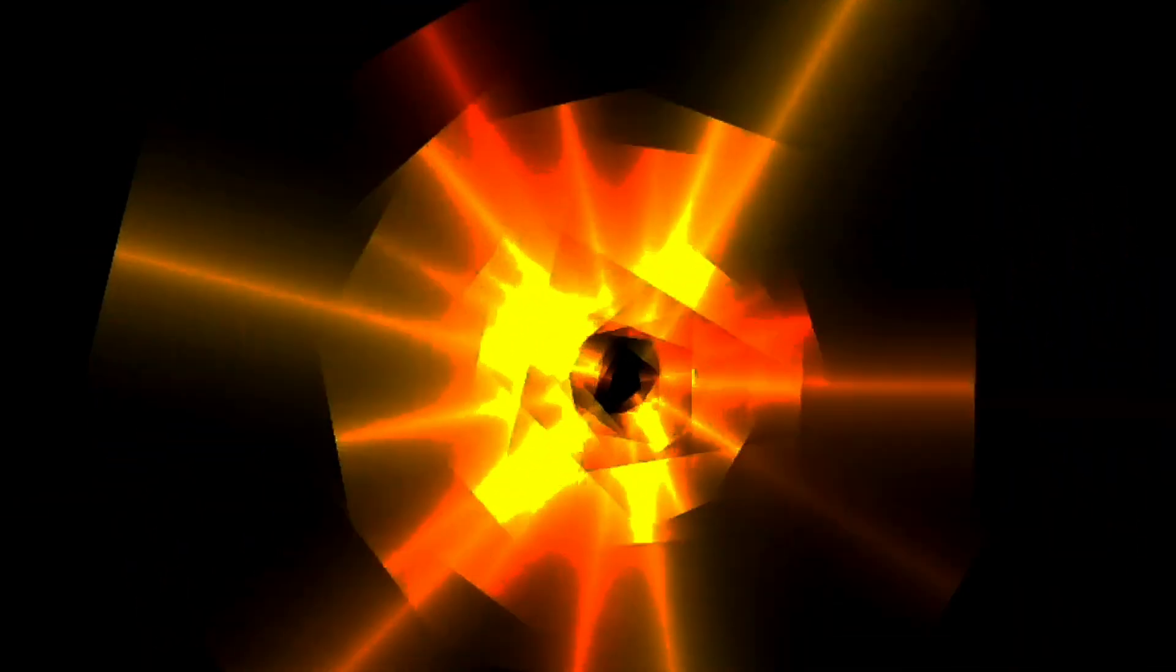once inflation ends and the hot big bang begins, the transition to a radiation dominated phase is immediate, and this causes the universe to rapidly evolve in the way we're familiar with since the start of the hot big bang.